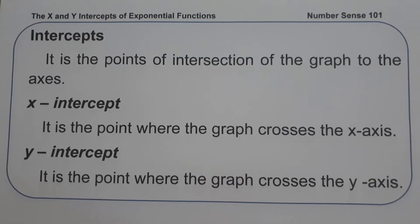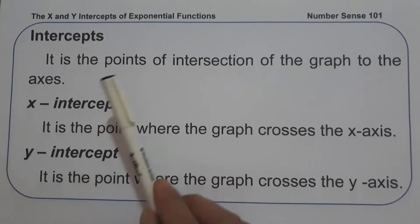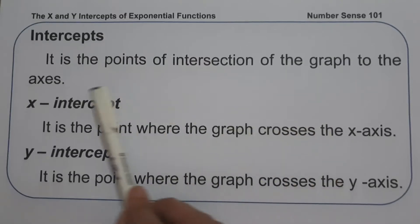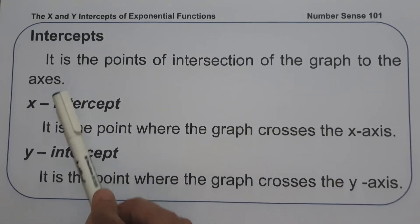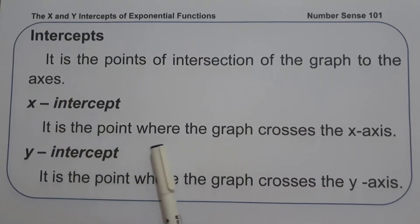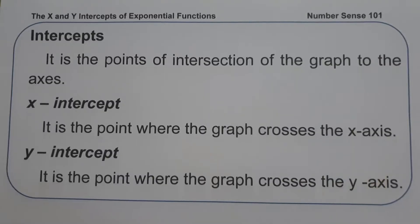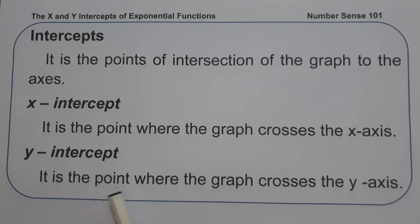When we say intercepts, it is the point of intersection of the graph to the axis. The x-intercept is the point where the graph crosses the x-axis — to find it, simply set y equal to zero. The y-intercept is the point where the graph crosses the y-axis — to find it, simply set x equal to zero.